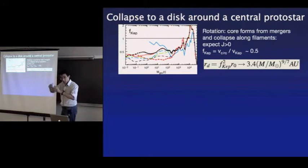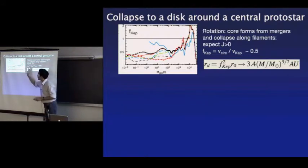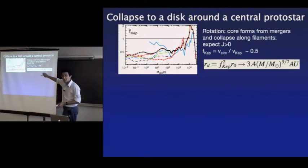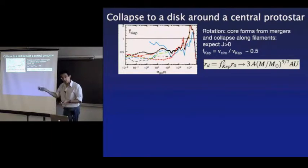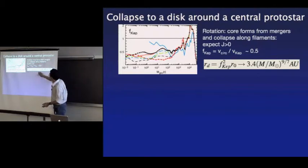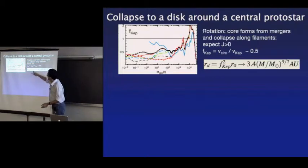There has already been some angular momentum transfer in the simulation, perhaps through a system of weak shocks in this core. We assume that angular momentum is conserved inside the sonic point of the accretion flow. If you do that, you can work out a circularization radius or disc radius as a function of the collapsed mass.